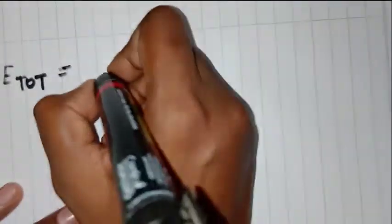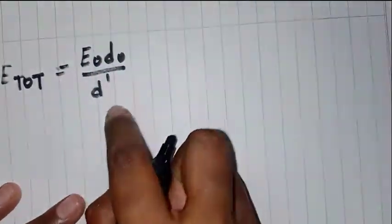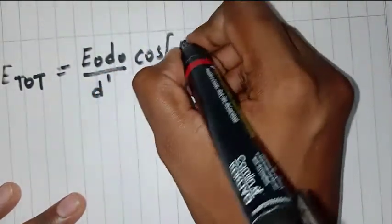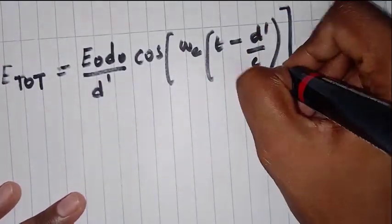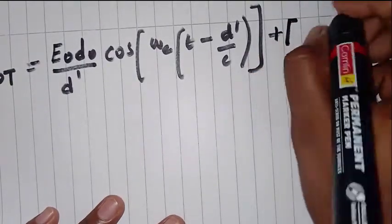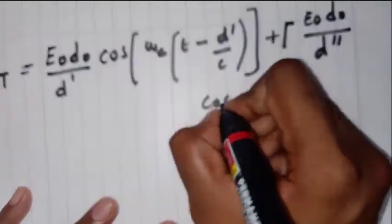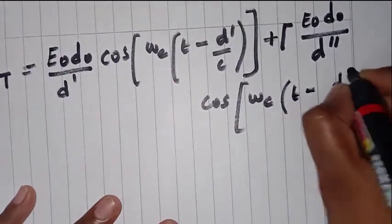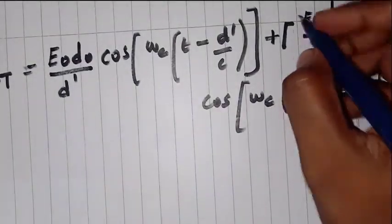So, we need to add these two equations to find the E-total equation. E-total equals the line-of-sight component — E₀·d₀/d' × cos(ωc(t − d'/c)) — plus the ground reflected component multiplied by the reflection coefficient: E₀·d₀/d'' × cos(ωc(t − d''/c)). The reflection coefficient is always equal to −1.